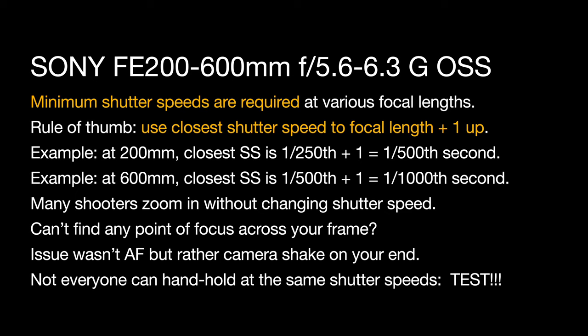At 600mm, the closest shutter speed is 1/500th of a second. Plus one stop going up in shutter speed would be 1/1000th of a second. Many shooters zoom in and out without changing the shutter speed, and this is a problem. If you can't find any point of focus across your entire frame, it is more than likely because of camera shake — your shutter speed was simply too low. The issue wasn't autofocus, but rather camera shake on your end. Not everyone can hand-hold the same shutter speed, so test and test and test. Find your limits personally for what you can do with this lens.